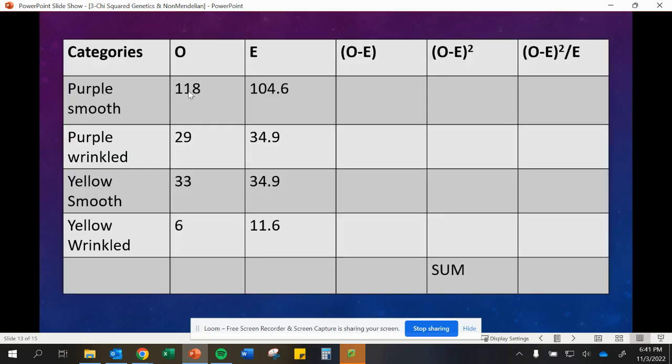Now that we have our observed and expected, we can put it into our chart. We'll do observed minus expected. I didn't actually go through and put all of the numbers, but you can pause this if you would like and see if you can calculate it out and see if you get the same sum that I get at the end for our chi-squared value of 5.52.